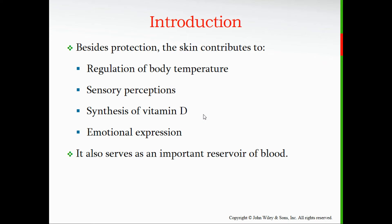Exposure to sunlight and UV radiation allows us to synthesize vitamin D through our skin. The skin also communicates emotional expression — not just through facial expressions, but through things like blushing, which lets people know you're embarrassed or excited. It also serves as an important reservoir of blood; with 22 square feet of surface area, there's a significant amount of blood stored in the skin's vessels.